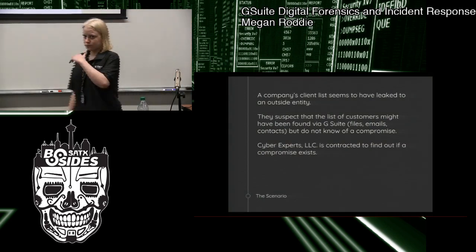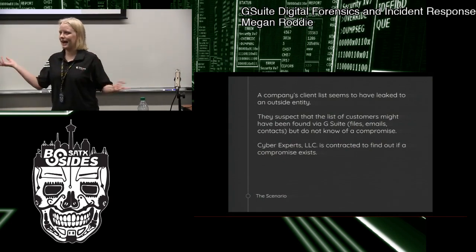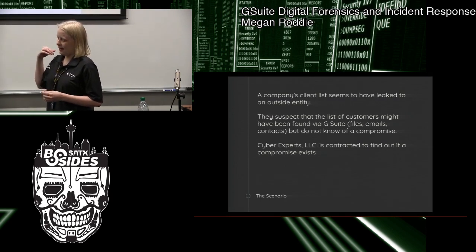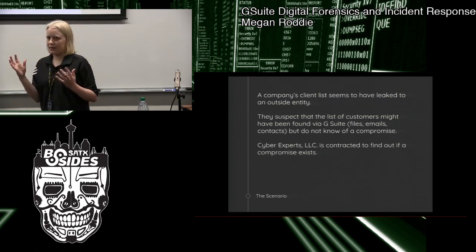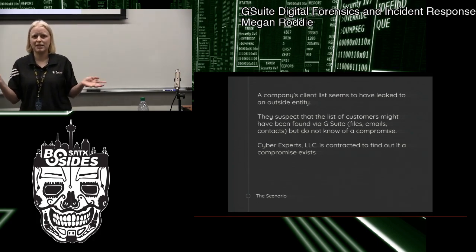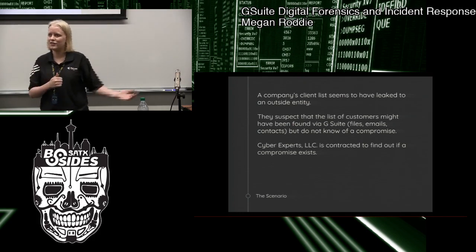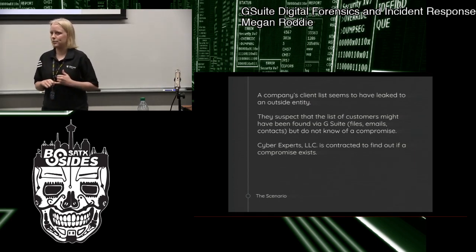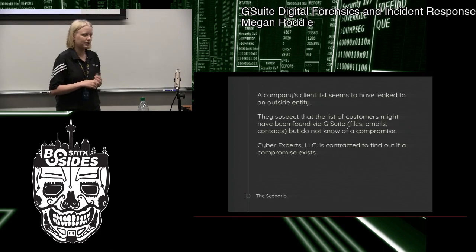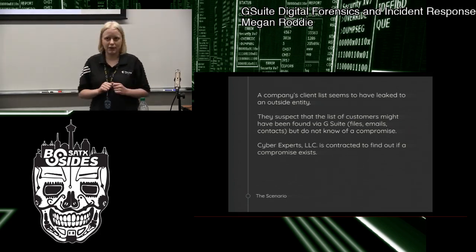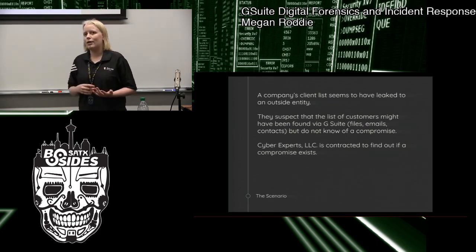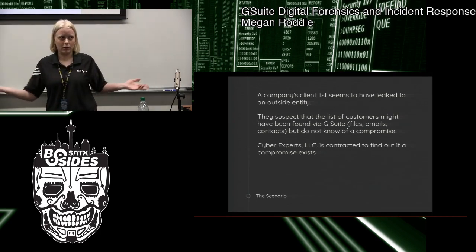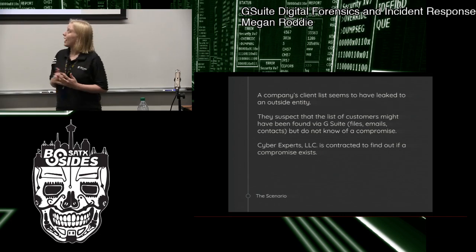Basically, we got an email saying — so there was a company, they had a bunch of clients, rich private people — and all of a sudden it seemed like their client list had leaked. Those people were getting spam and phishing emails related to this company. It seemed like someone found the client list, but they don't publish it publicly. The only place that all that information would be is in the emails, files, or contacts in their G Suite instance. But they hadn't been hacked as far as they knew, and they weren't phished — so how did they get in? They contracted Recon to come in and find out if they were compromised.